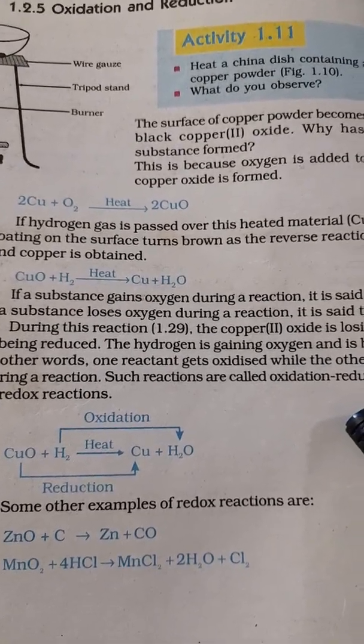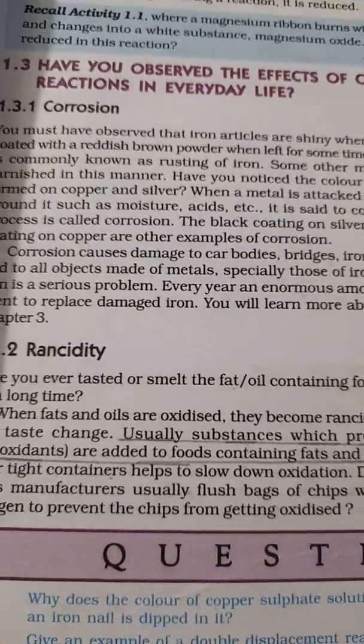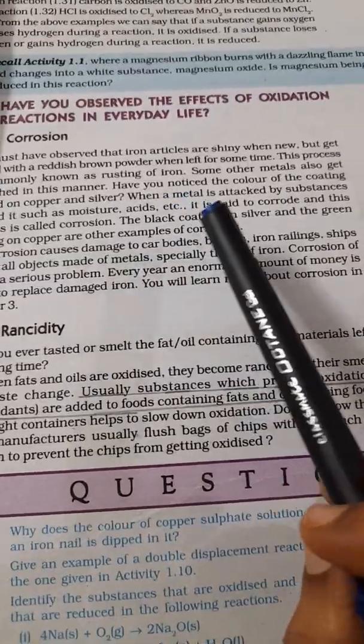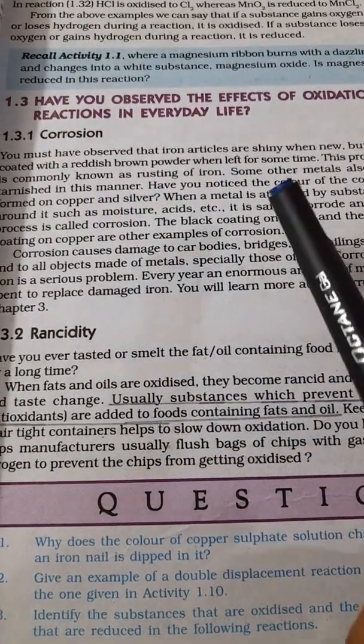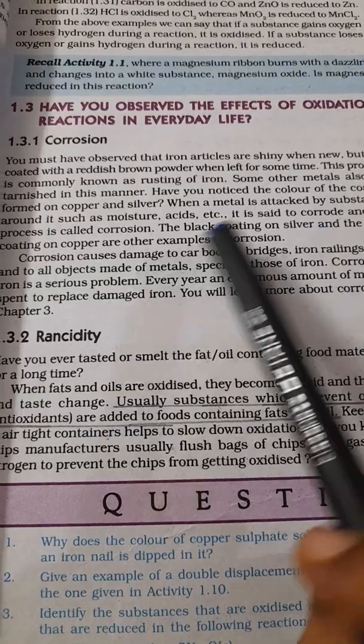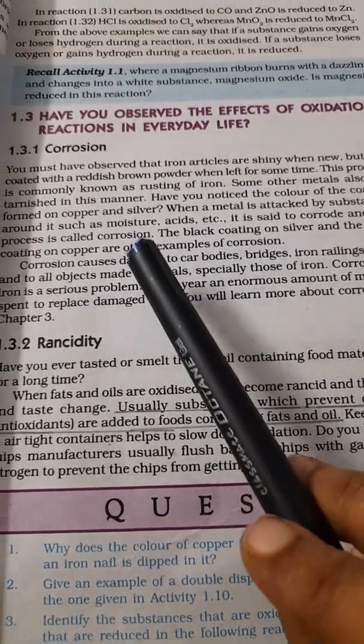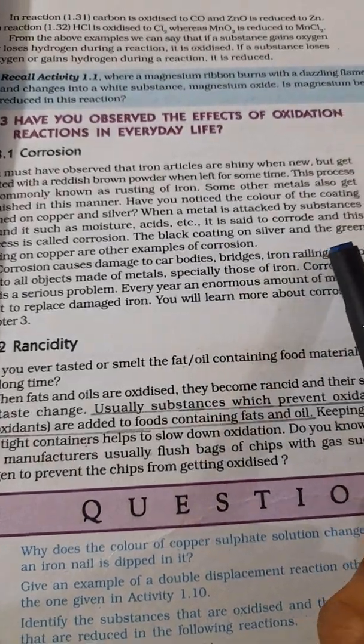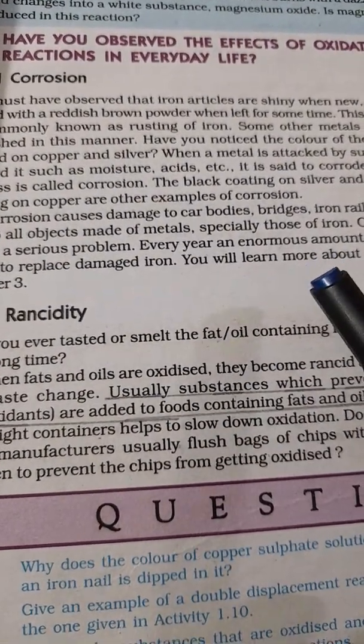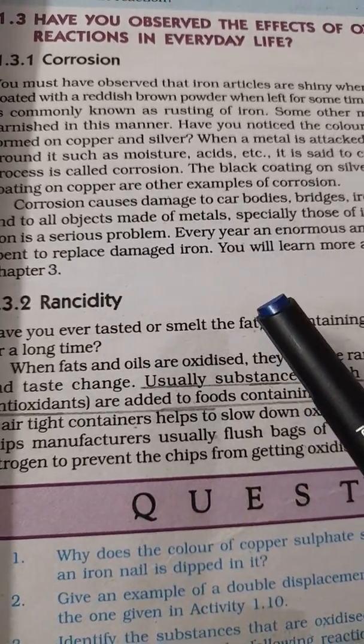Now we have got something known as corrosion. What is corrosion? You can see that iron articles are shiny when you get them new, but what happens when they get coated with reddish brown powder when you keep them in air for some time? This process we call rusting of iron. Some other metals are also rusted in this manner. Why does this happen? When a metal is attacked by substances like moisture, acids and all that, it gets corroded and this process is called corrosion. The black coating on silver and green coating on copper, all these are examples of corrosion. If you keep an iron nail outside for some time, the bright iron nail becomes a powdery brown substance, flaky substance is formed on top of it. That is what we call corrosion.